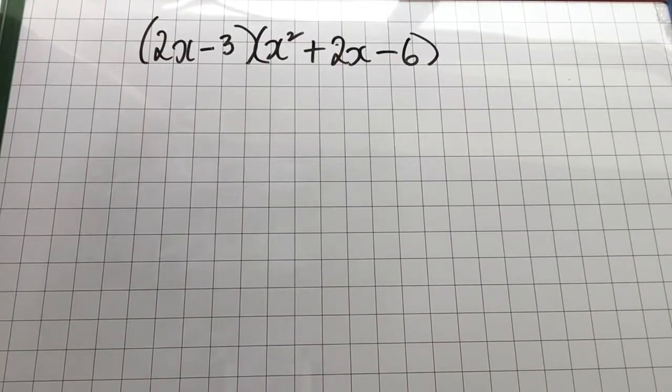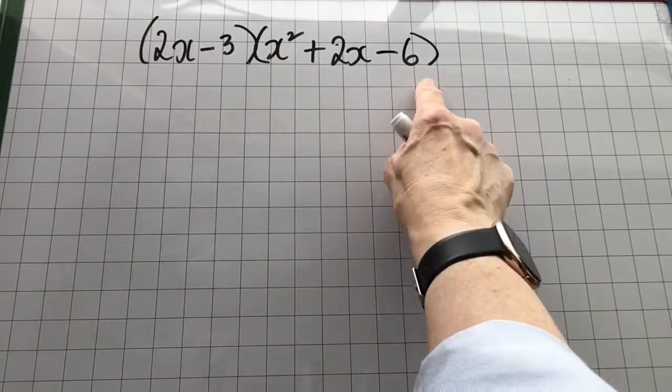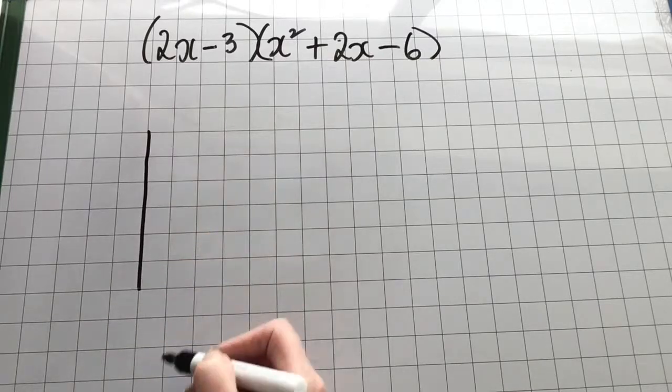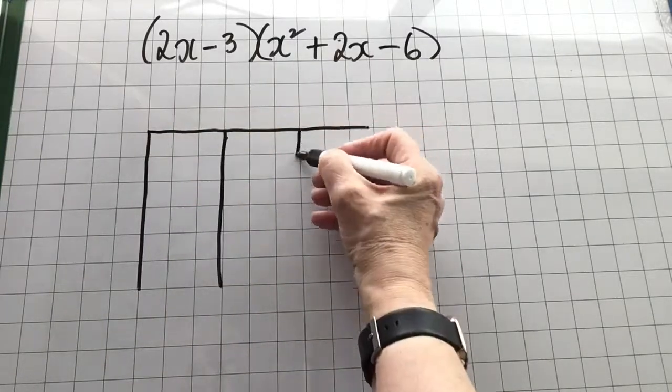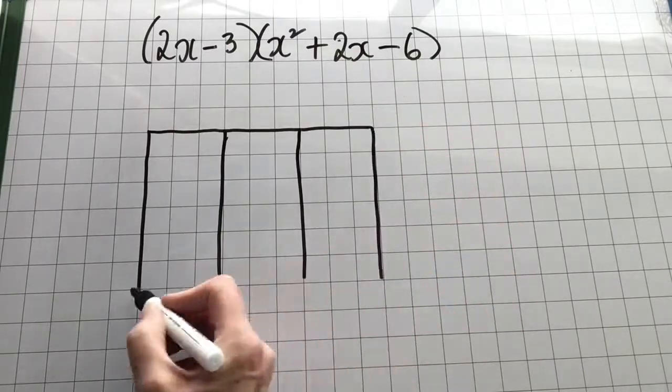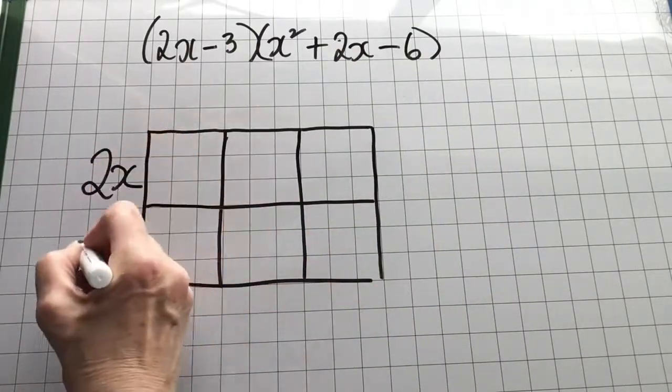So again we have two brackets here to multiply. But the second expression has 1, 2, 3 terms in it. So I draw a 2 by 3 grid to cater for those three terms in the second expression. So now I have six boxes to find the area.